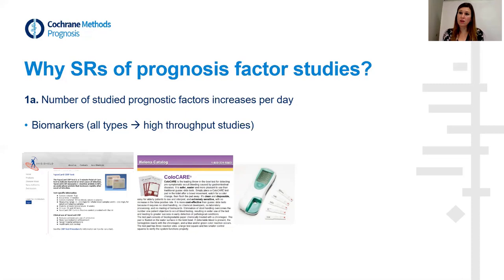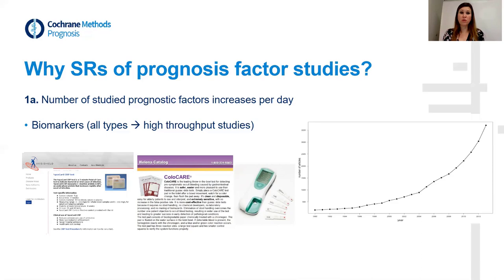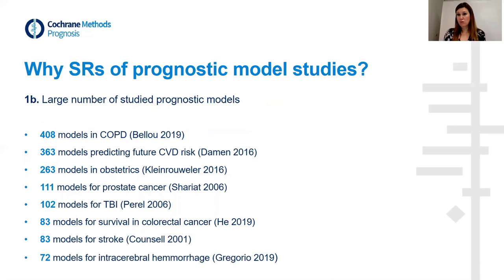Systematic reviews are also very well developed for assessing how studies were performed. So you get an overview of what is out there and also an overview of the quality of the information. The number of studies on prognostic factors is increasing rapidly, and especially the information on biomarkers is growing very fast. There are also many studies published on prognostic models.